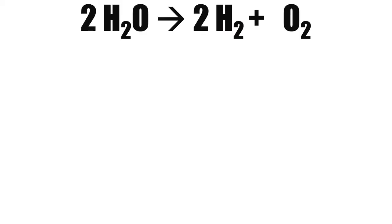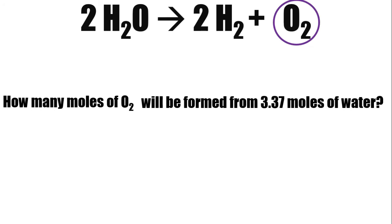Consider the decomposition of water to hydrogen and oxygen. You don't have to balance this because I already balanced the equation. But when you're given equations, the first step is to balance them. The question is, how many moles of oxygen will be formed from 3.37 moles of water?